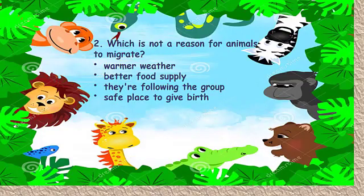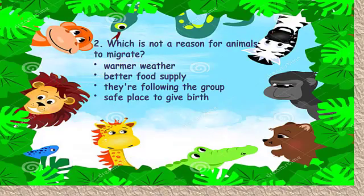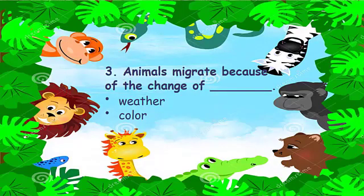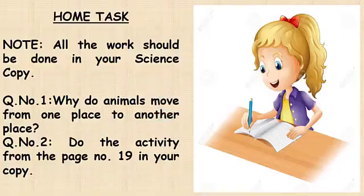Question 2: which is not a reason for animals to migrate? Warmer weather, better food supply, they are following the group, or safe place to give birth? The answer is: they are following the group. Animals migrate because of the change of weather.